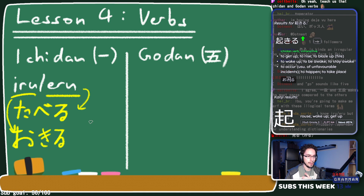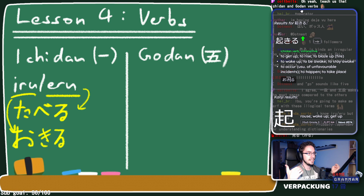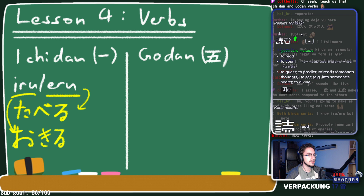What are godan verbs? Basically everything else. Anything that isn't ichidan is either suru/kuru — the exceptions — or it's a godan verb. For example, yomu — 'to read' — ends in 'mu,' so it can't be ichidan since 'mu' doesn't rhyme with iru or eru at all.